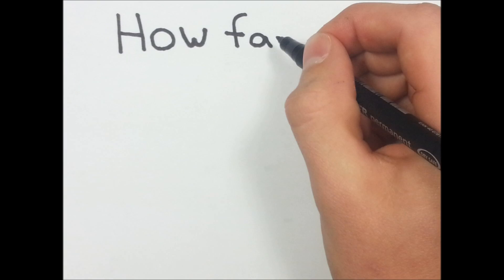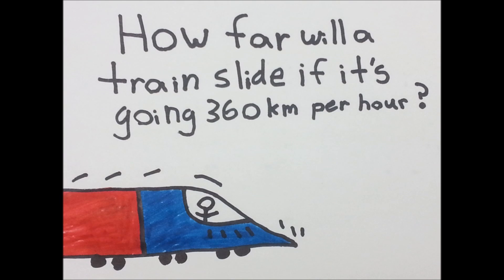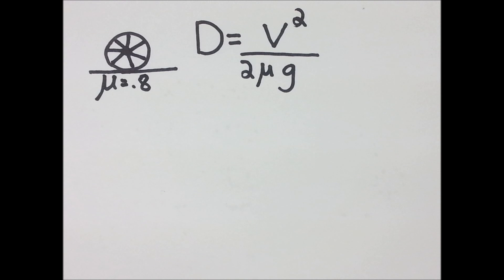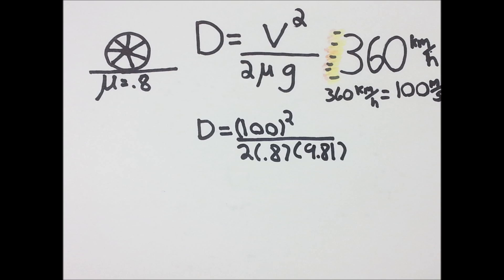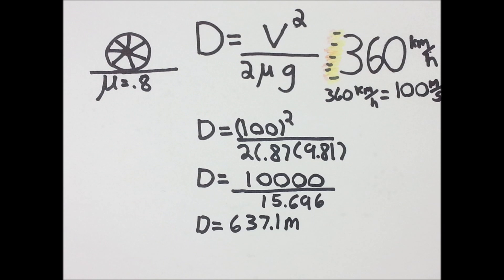Now that we know how to use the equation, let's use it. How long will it take a high speed train traveling at 360 kilometers per hour to stop? The coefficient of friction of the steel wheel onto the steel track is about 0.8. So if you punch that into the formula, you get 637.1 freaking meters.